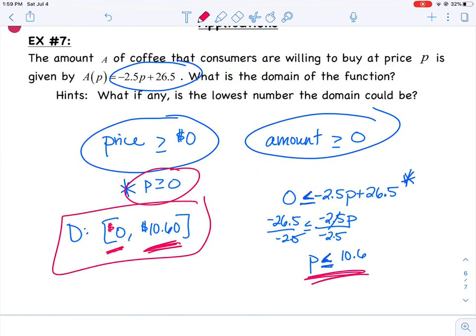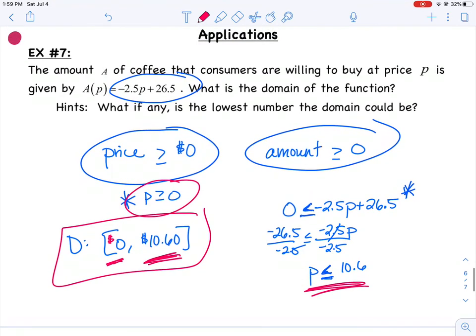Anything higher than that, my amount would be negative. Anything lower than that, my price would be negative. And neither of those really makes sense in context to this problem.